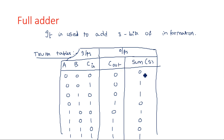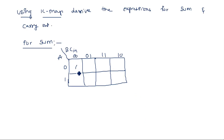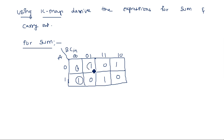Filling in the sum values into the K-map: the ones appear at positions 001, 010, 100, and 111. Notice that no two ones are adjacent to each other in the map. That is why we must map all four ones individually — there are no prime implicants, and all four are non-prime implicants.